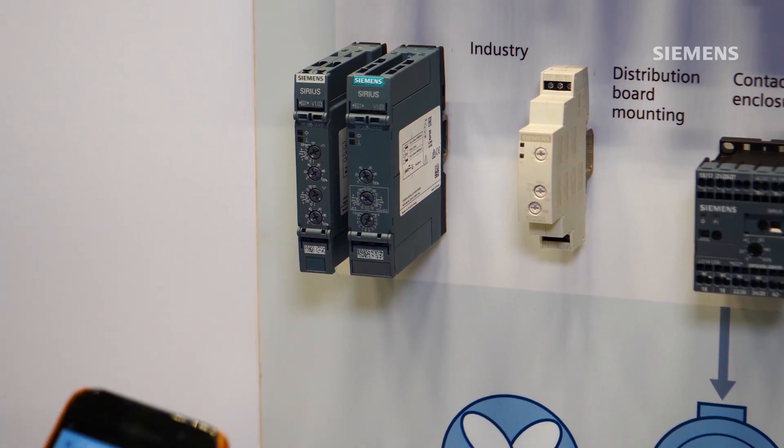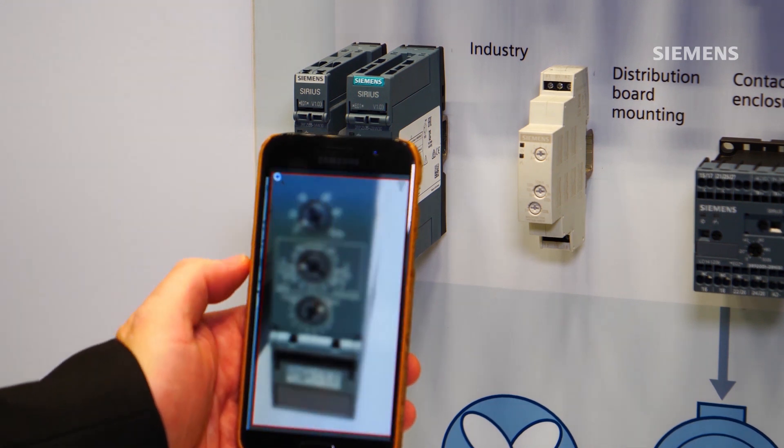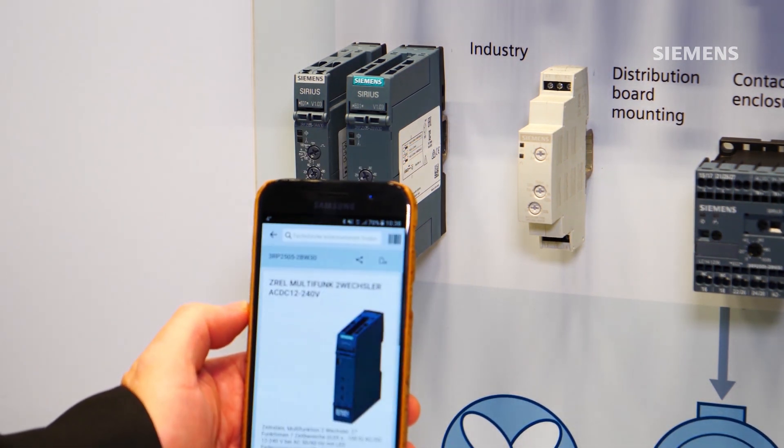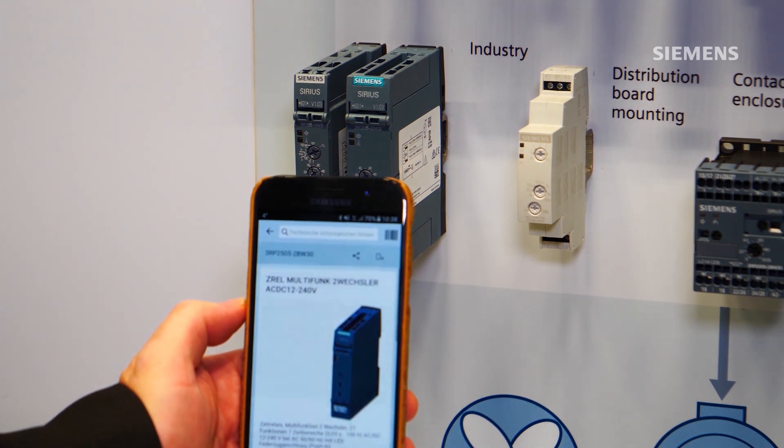By scanning in the 2D codes, you can quickly access the documentation of the device in the Siemens Industry Support app, for example.